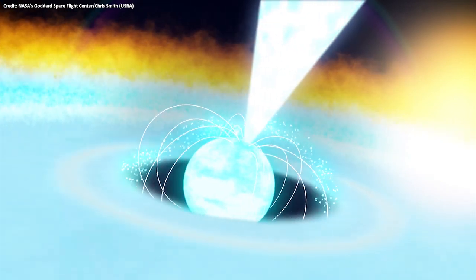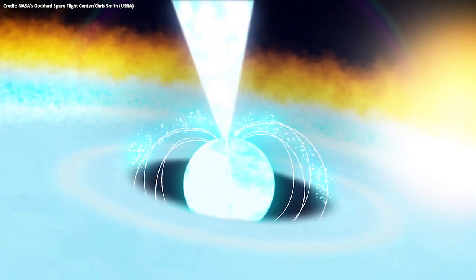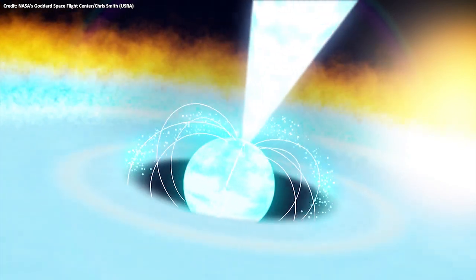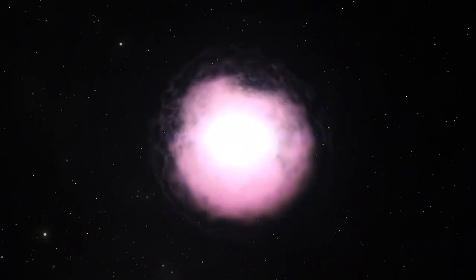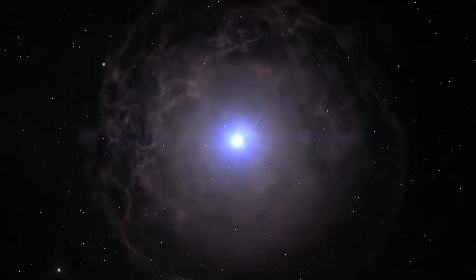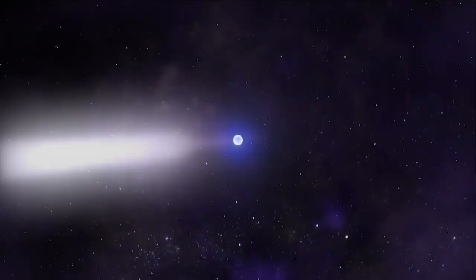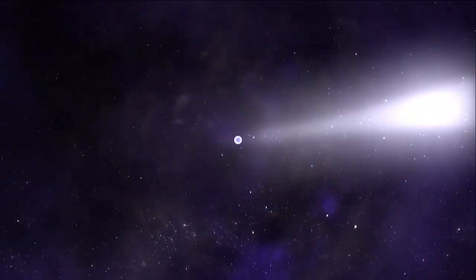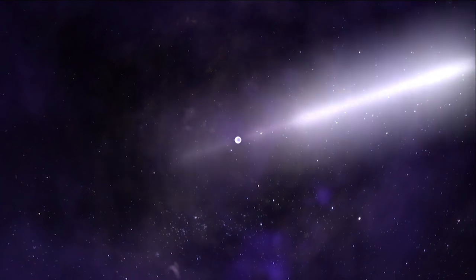As its name implies, a neutron star is composed entirely of neutrons. This is because when the very central region of a massive star, the core, collapses, it crushes together every proton and electron into a neutron.